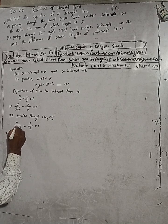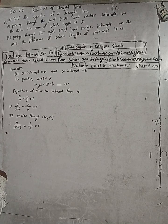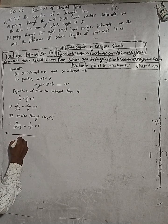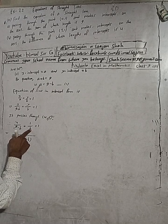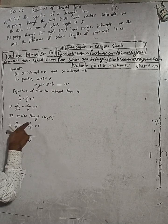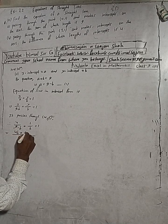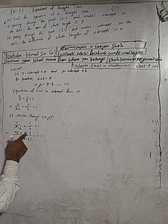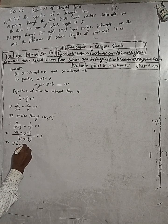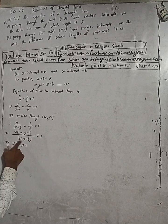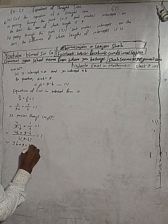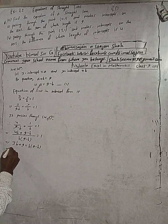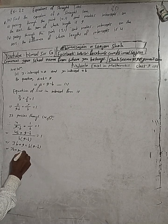Taking the LCM of (9 - b) and b, which is b(9 - b), we get: 4b + (9 - b) all over b(9 - b) equals 1. This simplifies to 4b + 9 - b = b(9 - b), which gives 3b + 9 = 9b - b².